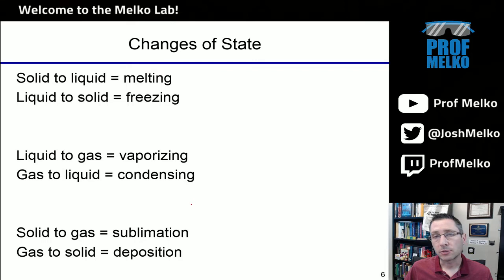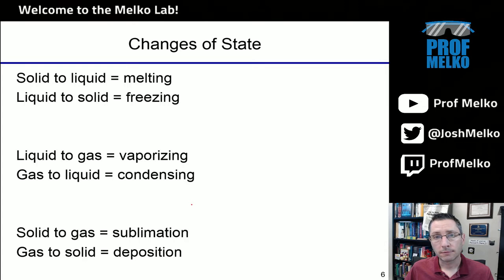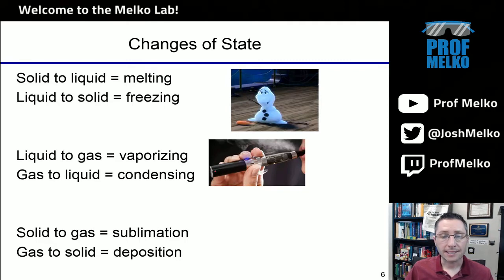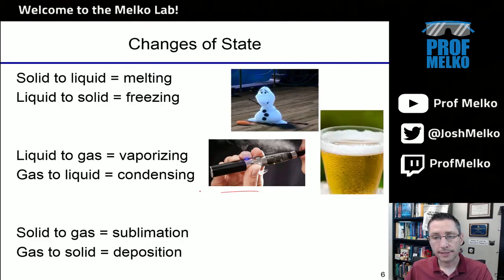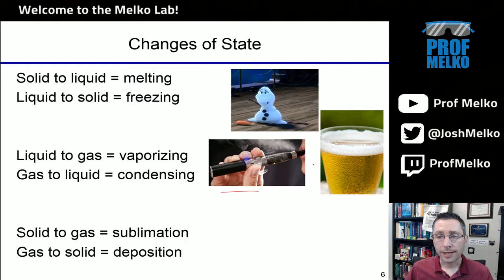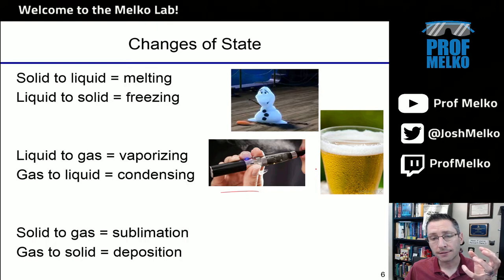This transition between states of matter — whether solid to liquid, liquid to gas, or solid to gas — all have unique names. Solid to liquid: melting — we're familiar with an ice cube melting. Liquid to solid: freezing. Liquid to gas: vaporizing. Vaping, of course, draws its name from this liquid to gas phase transition. Gas to liquid: condensing. A cold beverage on a very humid, hot day — you see some water molecules in the air, the gas, hitting the side of the container and sticking to it, forming liquid drops. That's condensation or condensing.